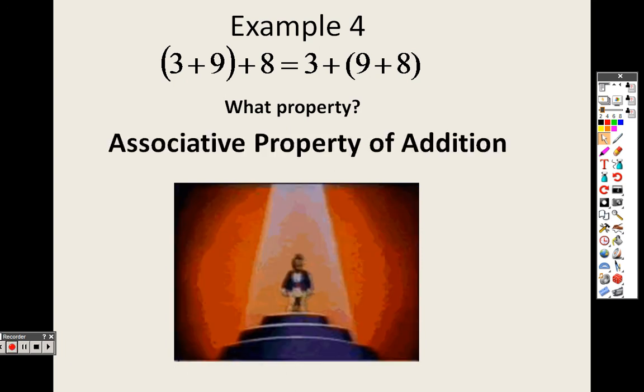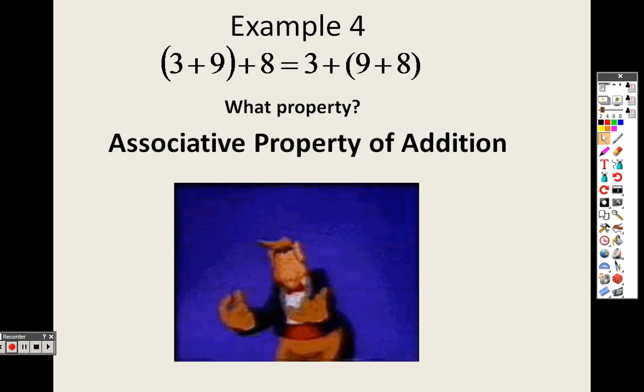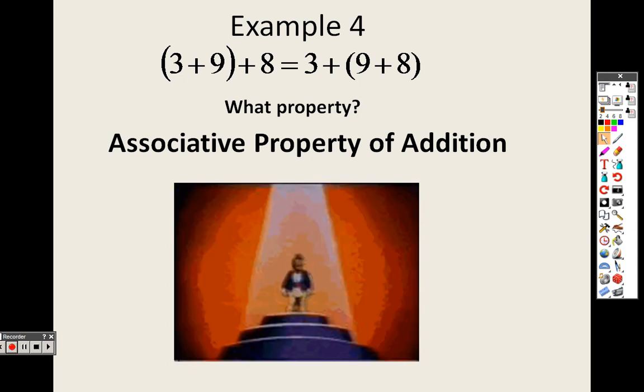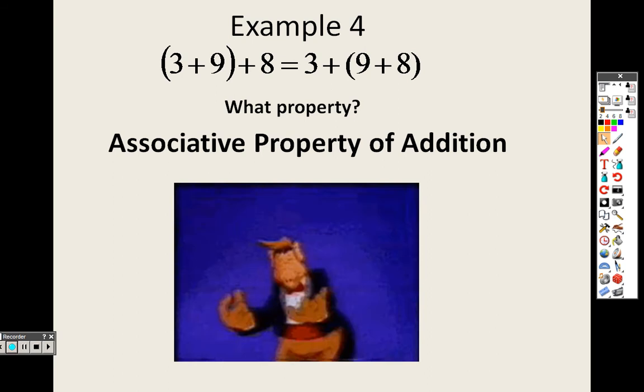It's the associative property. The reason being is one, we know it's of addition because it's addition throughout the whole thing. The second thing is we're regrouping. The order hasn't changed at all. We just changed where the parentheses were. So associative property states that we're just regrouping the items.